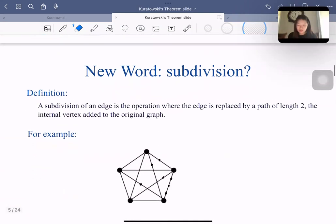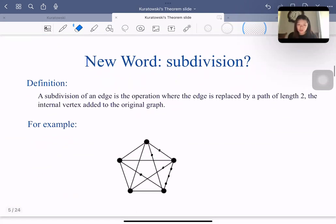So what is subdivision? A subdivision of an edge is the operation where the edge is replaced by a path of length 2, the internal vertex added to the original graph. So here is an example.